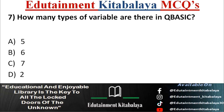Question number 7. How many types of variables are there in QBASIC? A. 5. B. 6. C. 7. D. 2. Correct answer is D. 2.